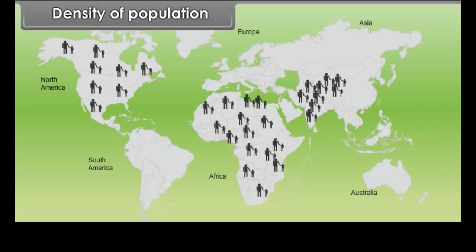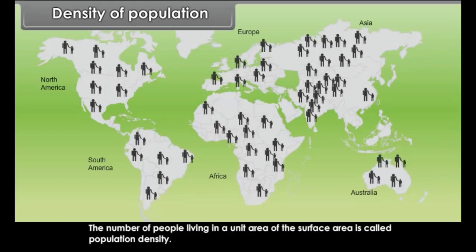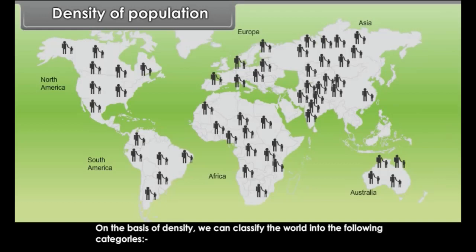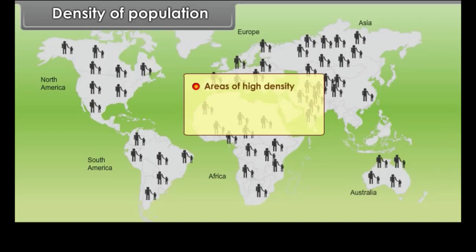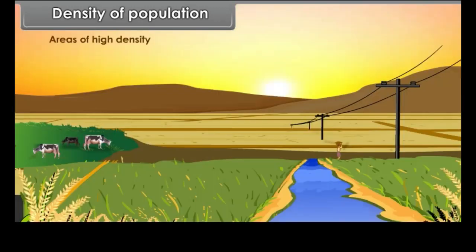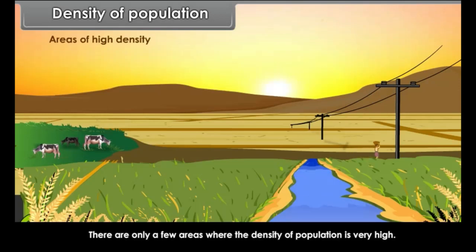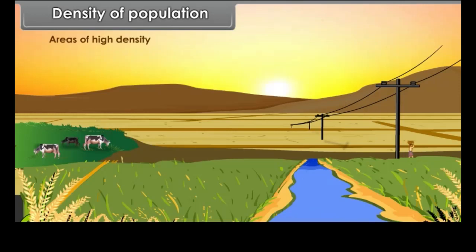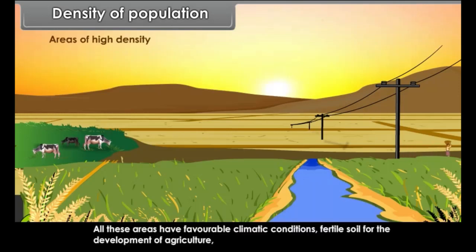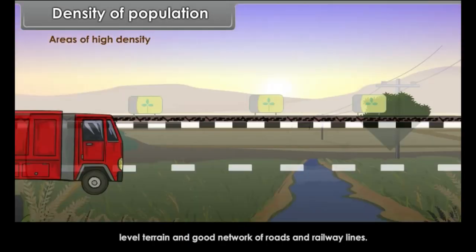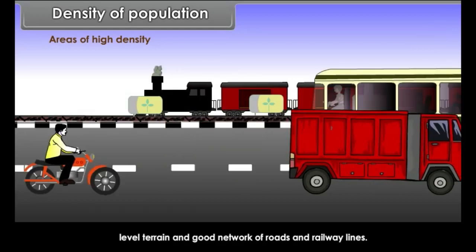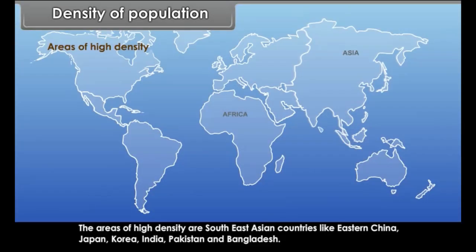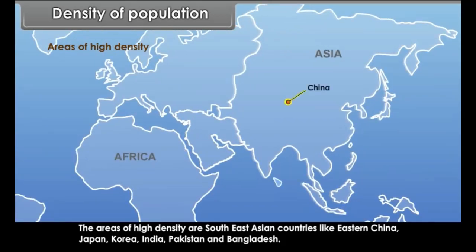Density of Population: The number of people living in a unit area of surface is called population density. The world can be classified into areas of high density, moderate density, and low density. Areas of high density have favourable climatic conditions, fertile soil, level terrain and good road and railway networks. High density areas include Southeast Asian countries like Eastern China, Japan, Korea, India, Pakistan and Bangladesh.